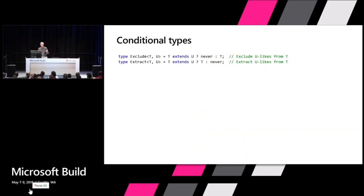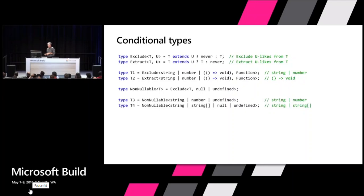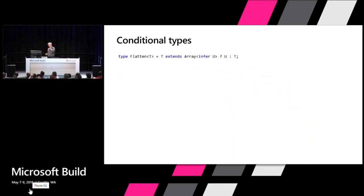This cleverness can be used to create interesting types like a thing that reduces or extracts stuff from a union type. For example, if I have a string or number or some function type and I Exclude function, I get just string or number. If I Extract function, I get only the function parts. And I can make a NonNullable<T> that gets rid of null and undefined from some T, which is quite useful. We also support the ability in conditional types to infer constituent types — say I want to write a flatten or smoosh operator.